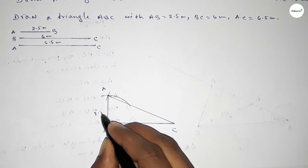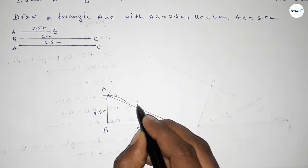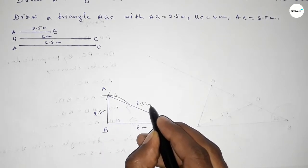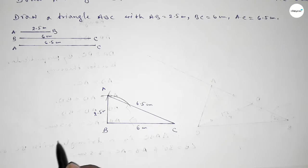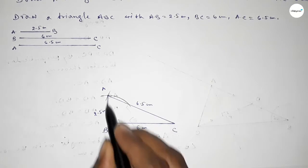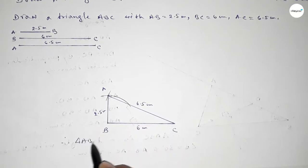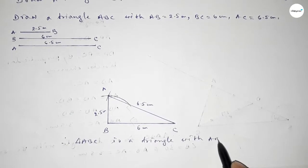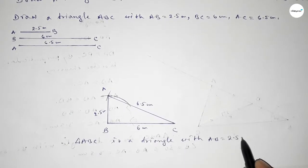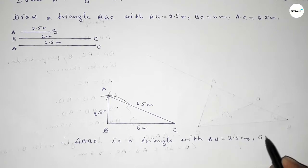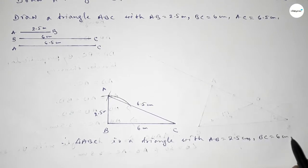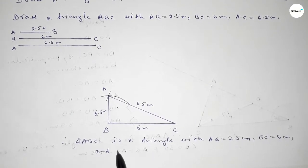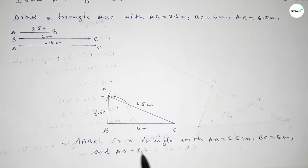Joining A and B first, then joining A and C. So BC is 6 centimeter, AB is 2.5 centimeter, and AC is 6.5 centimeter. Therefore triangle ABC is a triangle with AB equal to 2.5 centimeter, BC equal to 6 centimeter, and AC equal to 6.5 centimeter. That's all.